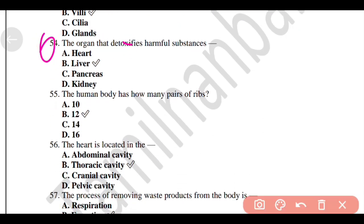The organ that detoxifies harmful substances, Option B, Liver. The human body has how many pairs of ribs? Option B, 12. The heart is located in the thoracic cavity.